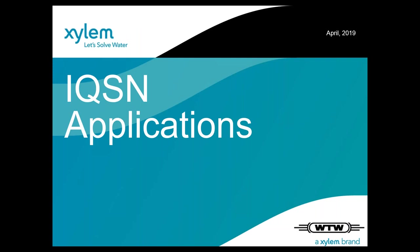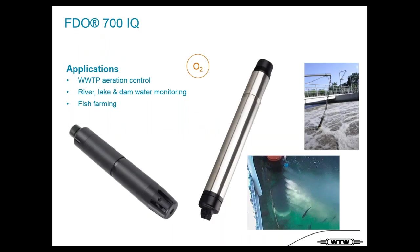Now a brief overview of IcoSensorNet applications. For DO measurement with the FDO sensor, main applications are wastewater treatment plant aeration control, river, lake and dam monitoring, and fish farming. It is suitable for all aeration control types — SBR reactors, normal nitrification/denitrification, and special applications like anammox treatment. The FDO can cover the complete range of DO applications.